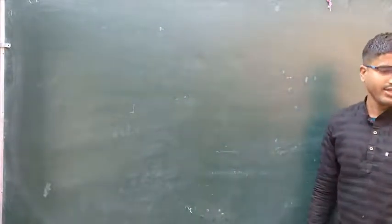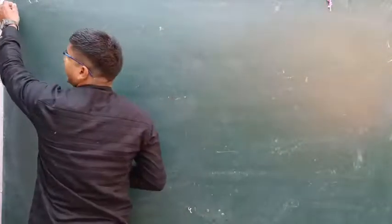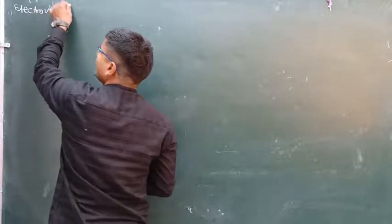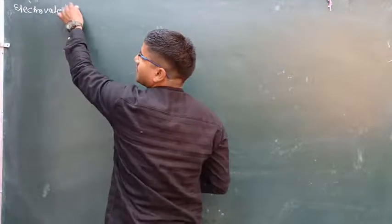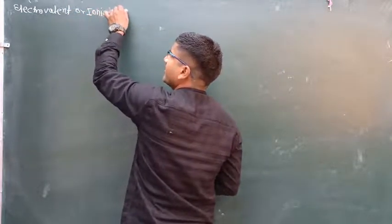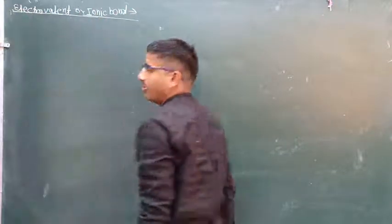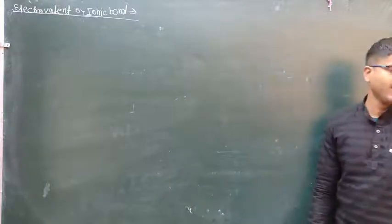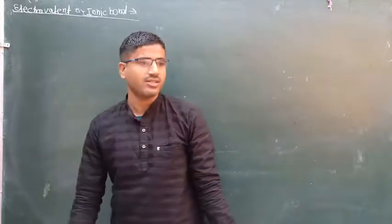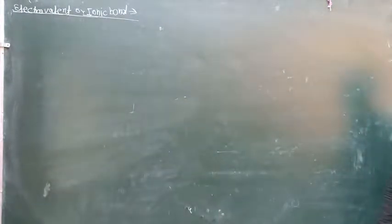Cross. Next is electrovalent bond. Electrovalent bond, ionic bond. When you have two charges, you will get positive and negative charges, or you will get an electrostatic bond. Electrovalent bond, ionic bond.